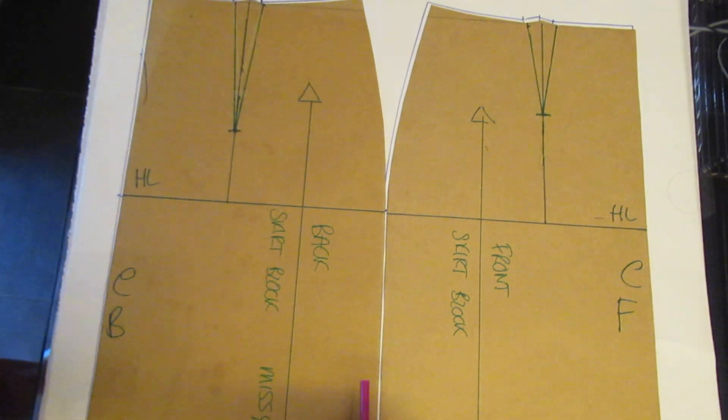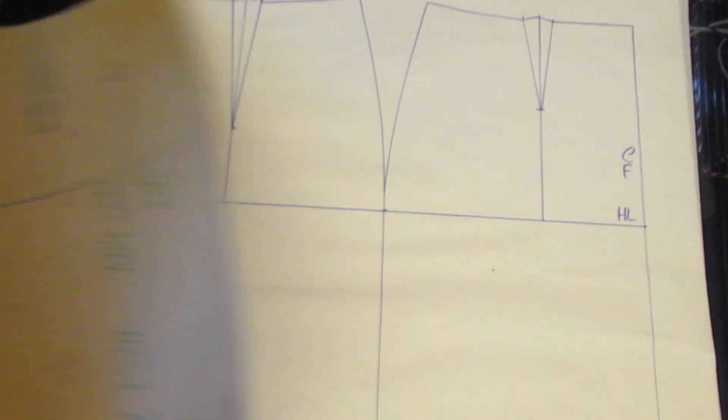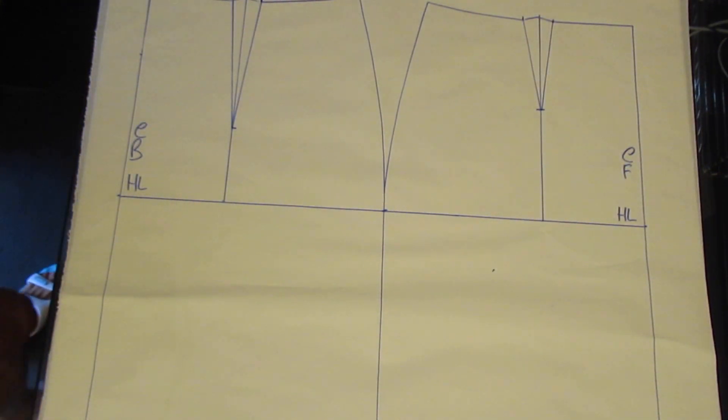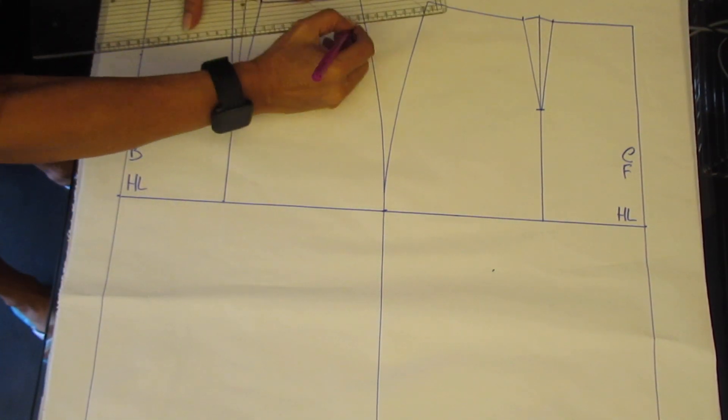You start by tracing the skirt block down to the knee line, writing the abbreviations hip line, centre back, centre front.